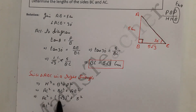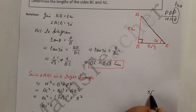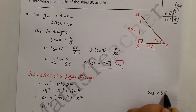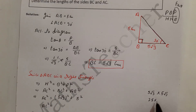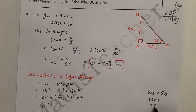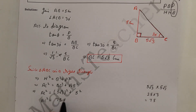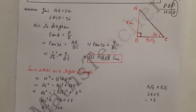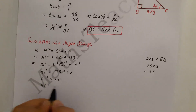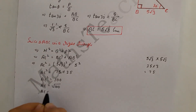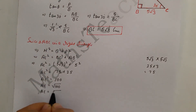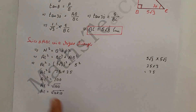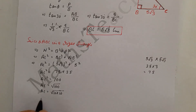Solving: (5√3)² = 5 × 5 × √3 × √3 = 25 × 3 = 75. And 5² = 25. So AC² = 75 + 25 = 100. Therefore AC = √100 = 10. We can verify: 10 × 10 = 100, so AC equals 10 cm.